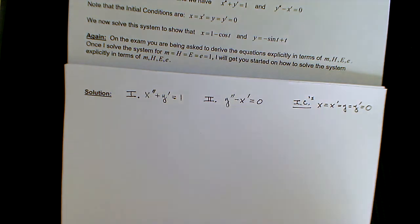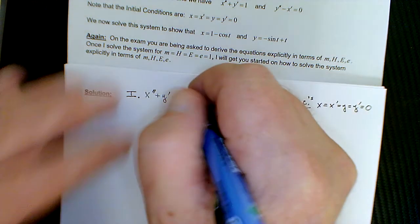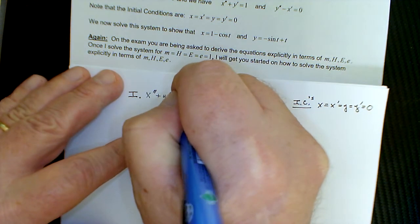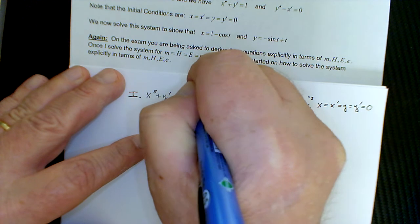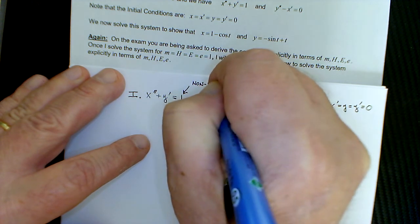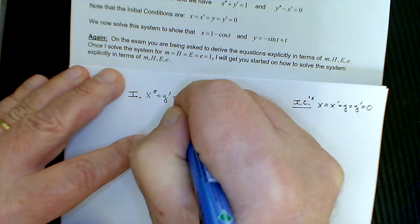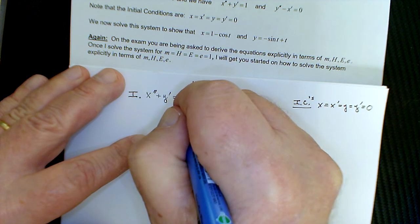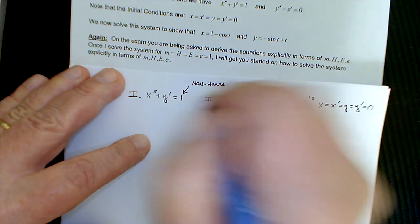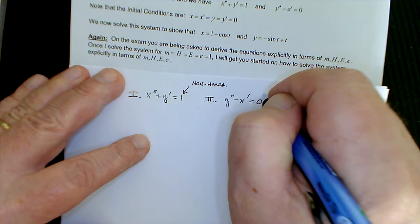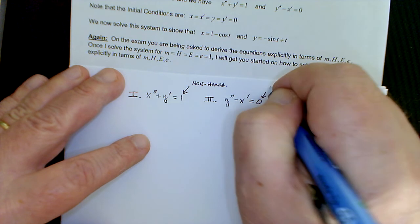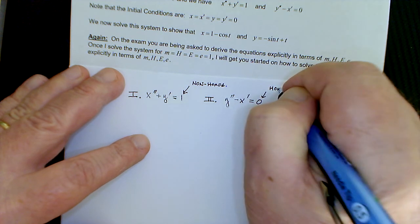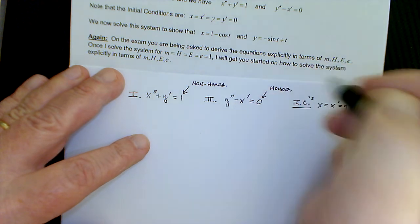So note two things here to begin with, that this equation is non-homogeneous, because it's equal to a function, in this case a constant, but it's not 0, that's the point. But this one is homogeneous, because it is equal to 0.